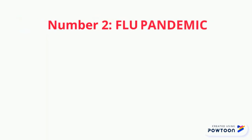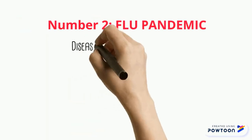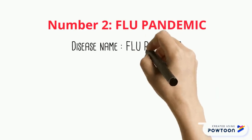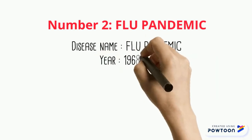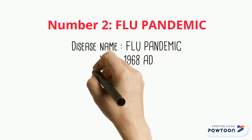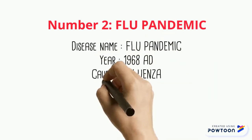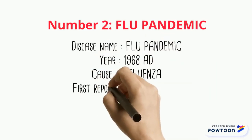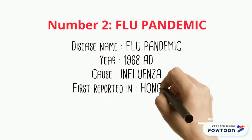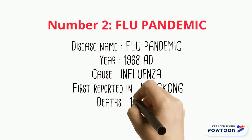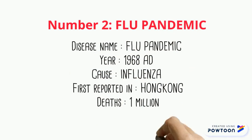Number 2 is the Hong Kong Flu, a category 2 flu pandemic. The 1968 flu pandemic was caused by the H3N2 strain of the influenza virus. From the first reported case on July 13, 1968 in Hong Kong, it killed around 1 million people.